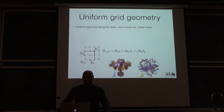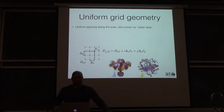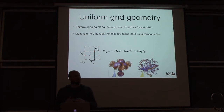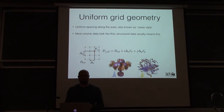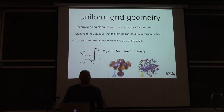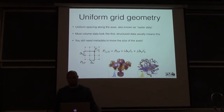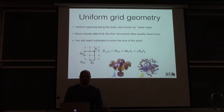The simplest type of data is a uniform grid — this is exactly like the cosmology data we saw in the video. You have uniform spacing along each axis, also known as raster data. Most volume datasets that we're isosurfacing or volume rendering look like this because it's the easiest convention and most common type. Usually when people talk about structured data in scientific visualization, this is what they mean.